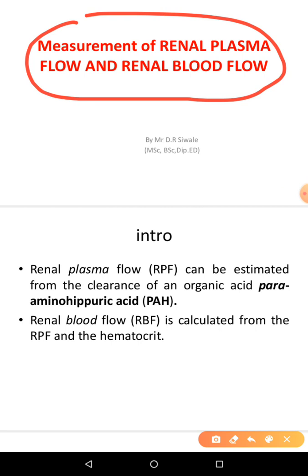Renal plasma flow, also called RPF, can be estimated from the clearance of an organic acid called para-aminohippuric acid. You can use para-aminohippuric acid to estimate the renal plasma flow — that is the amount of plasma flowing to the kidneys. And renal blood flow is calculated from the renal plasma flow and the use of hematocrit.